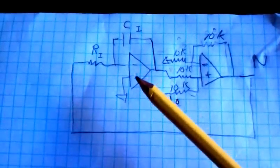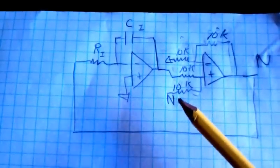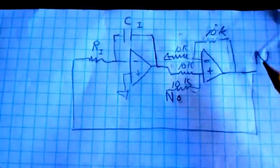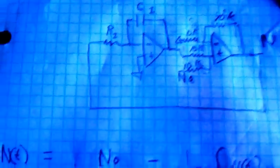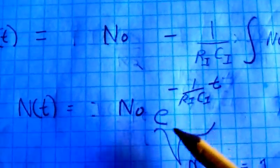This is the circuit that we would use. Take the differential equation, put it into integral form. We have our NO and our CI and RI. And that's the amount of nuclear material left. And we can see how we were able to scale so easily.